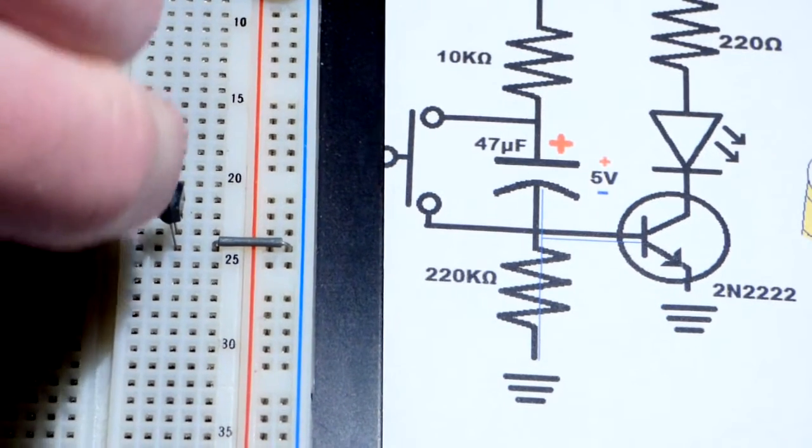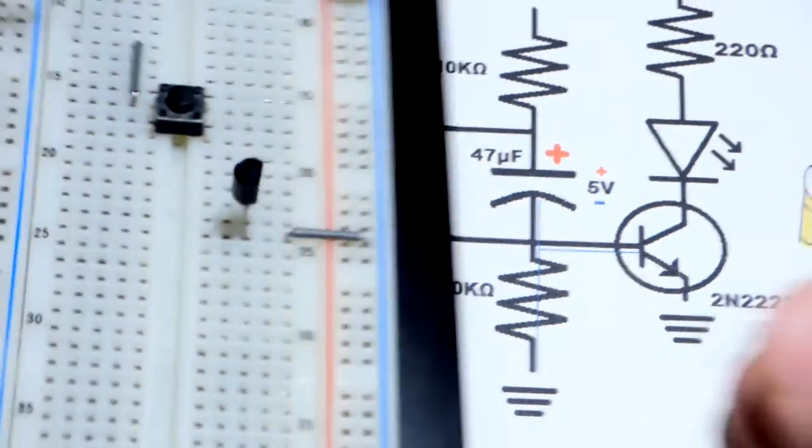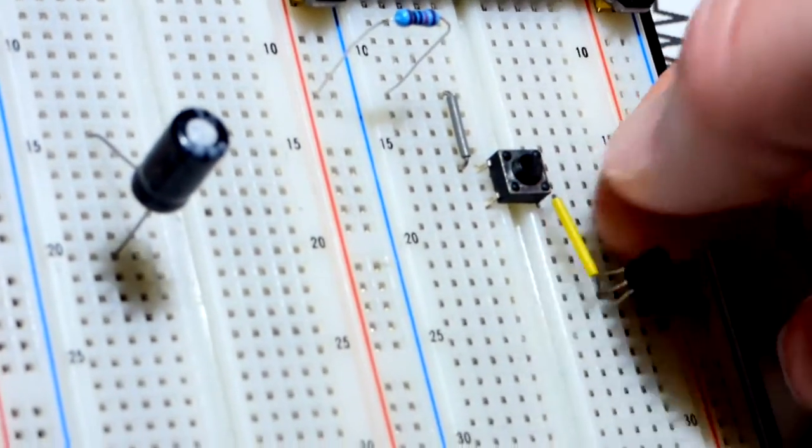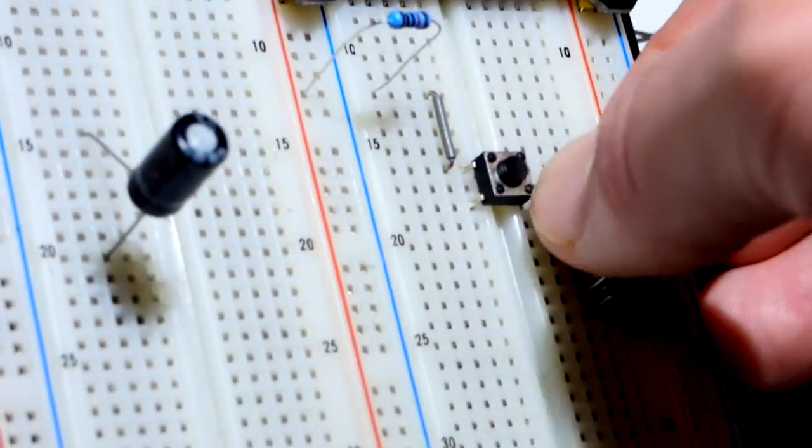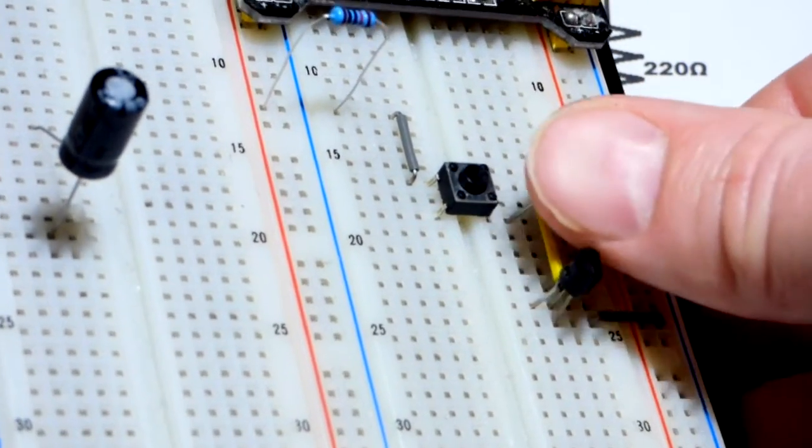So again, I'm going to use this jumper. It doesn't matter which side we put it on. Let's put it on the back. But the base should come to one side of the switch. There we go.